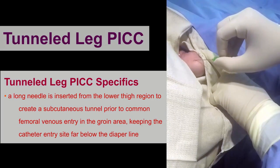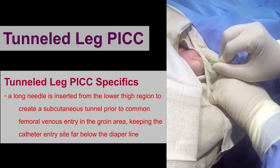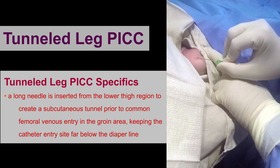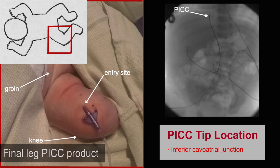For a tunneled PICC in the leg, a long needle is inserted from the lower thigh region to create a subcutaneous tunnel prior to common femoral vein entry in the groin area, keeping the catheter entry site far below the diaper line. The final PICC tip is located near the inferior cavoatrial junction.